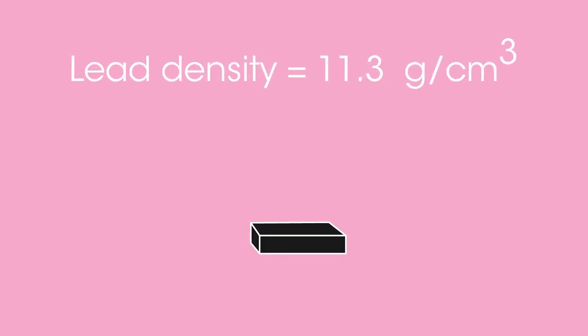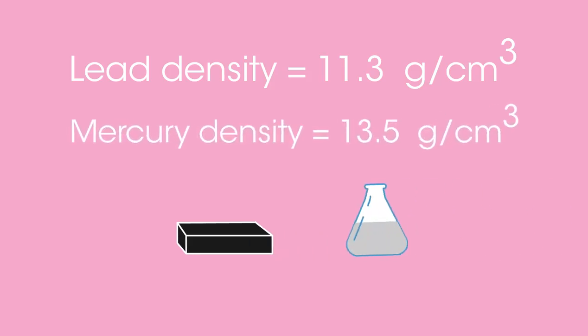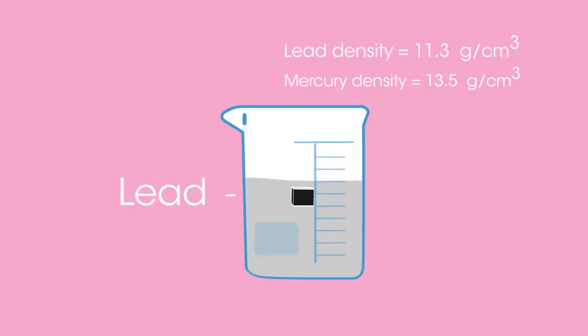Lead has a density of 11.3 grams per cubic centimeter and liquid mercury has a density of 13.5 grams per cubic centimeter. What would happen if a block of lead were placed in a beaker of liquid mercury? Pause the video while you think. The lead would float in the liquid mercury.